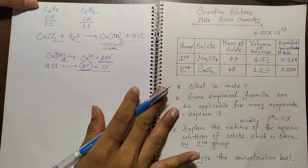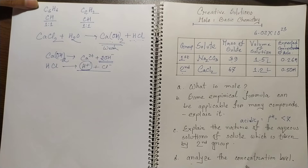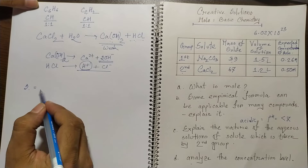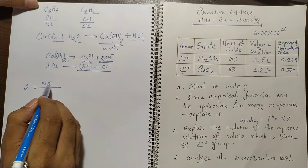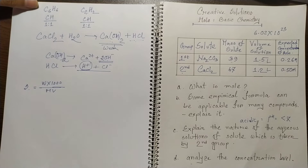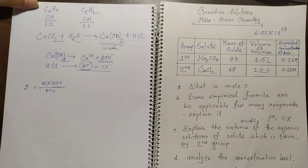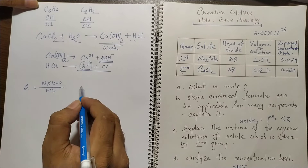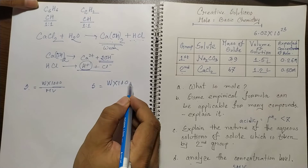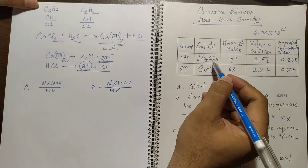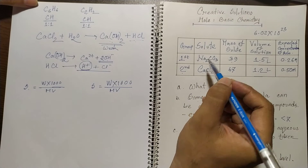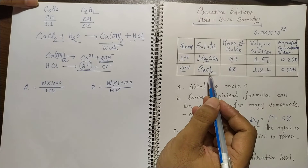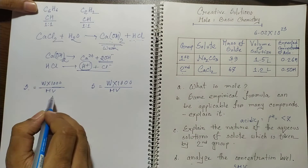Now for the fourth question, we analyze the concentration level. The molarity formula is: M = (w × 1000) / (molecular mass × V). For the first group, sodium carbonate has a molecular mass of 106. We apply the formula with w = 39 grams and V = 1.5 liters.